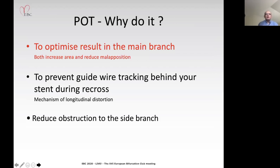Most of the audience will understand why we do POT. The main reason is to optimize the result in the main branch—to increase the area and reduce malapposition. I'm also going to talk about the role of POT in preventing guidewire tracking behind the stent during recross, which is an important consideration when we consider the risk of longitudinal distortion of the stent, and then focus on how we reduce obstruction to the side branch.